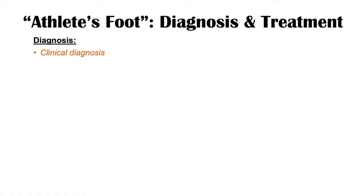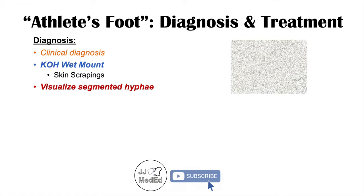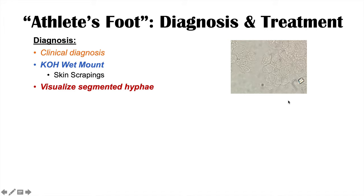The diagnosis of athlete's foot is often a clinical diagnosis — taking the patient history, risk factors, signs and symptoms, and examining the skin lesion is often enough. We could also do a potassium hydroxide or KOH wet mount looking at skin scrapings. If we see segmented hyphae on the KOH wet mount, that confirms a tinea or fungal skin infection.